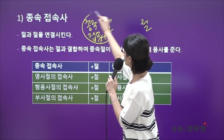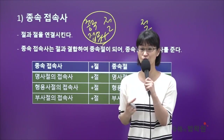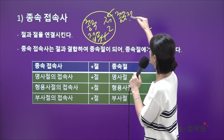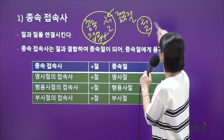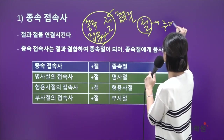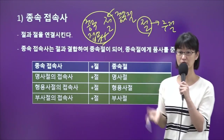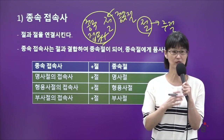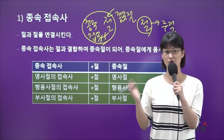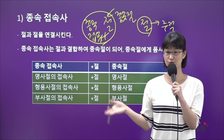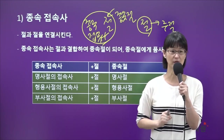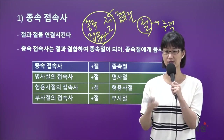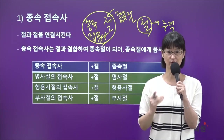이 절 앞에 오면 항상 뒤에 있는 절과 한 덩어리로 묶이니까 이 앞에 있는 절의 명칭이 종속절이 됐어요. 그럼 나머지 절은 주절이에요. 즉, 문장의 주인이 되는 절이 주절이고 그 주절에 종속되는 절이 종속절인데, 뒤에 나오는 명사절, 형용사절, 부사절을 할 때는 이 주절이라는 말을 되게 많이 써요. 주절은 종속접속사가 붙지 않은 절, 즉 문장의 주인이 되는 절이에요.